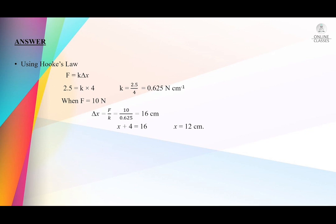When the force is 10 Newton, we use the same equation: Δx = F/k. Force will be 10, spring constant will be 0.625, giving 16 centimeters as the total extension. The total extension is the sum of x plus 4, so x will be 12 centimeters. The answer is option C — the extra extension is 12 centimeters.